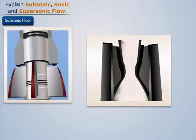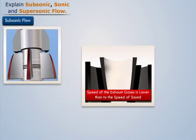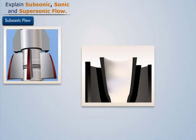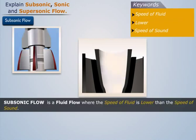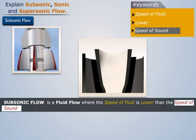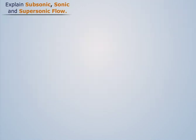The flow of exhaust gases through the convergent section is said to be subsonic. Thus, subsonic flow is a fluid flow where the speed of the fluid is lower than the speed of sound. For subsonic flow, the value of Mach number is less than one.